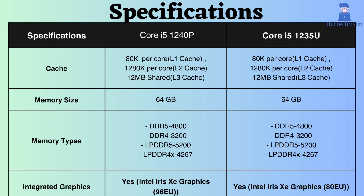The L1, L2, and L3 cache sizes for both processors are 80KB per core, 1280KB per core, and 12MB shared, respectively. This amount of cache is considered ample for a mid-range processor.